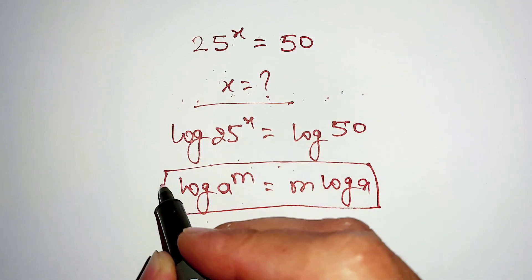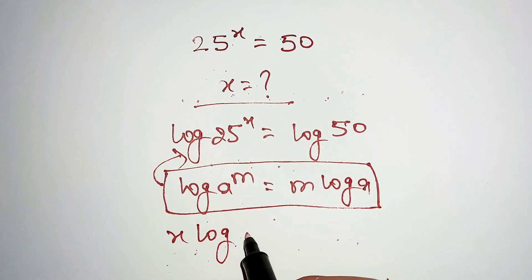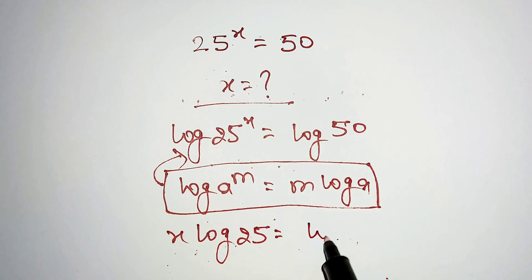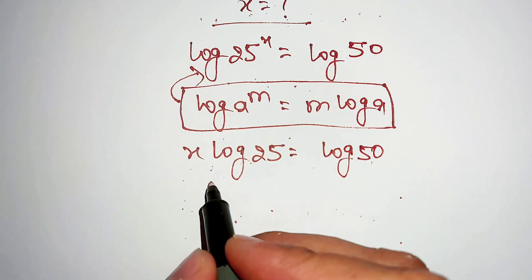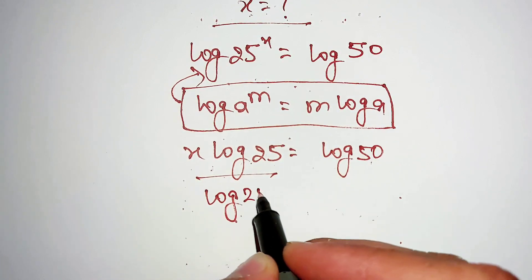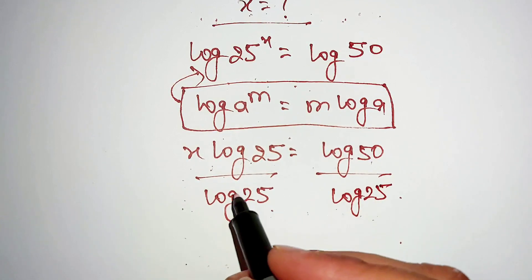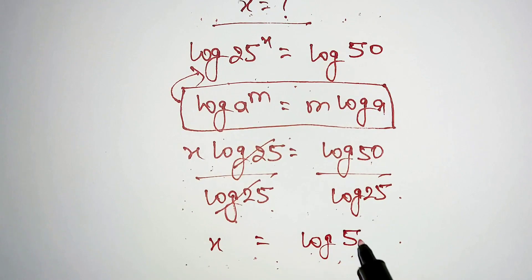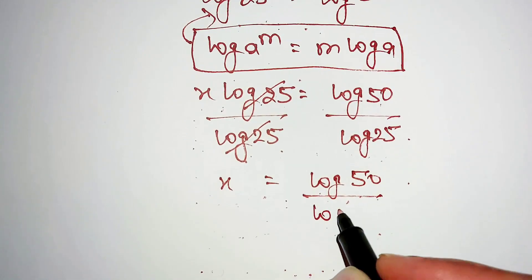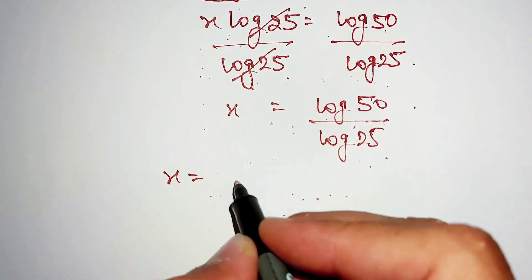Applying this formula here, we get x log 25 equal to log 50. Now divide both sides by log 25 — this will cancel out, and x equals log 50 divided by log 25.